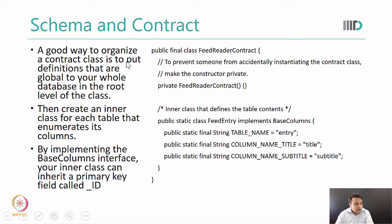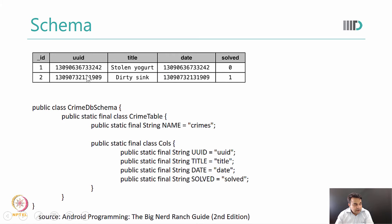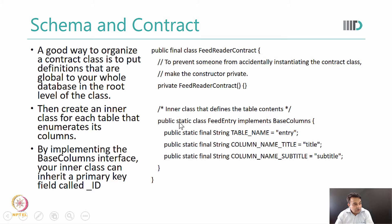A good way to organize a contract class is to put definitions that are global to your whole database at the root level of the class, so they are accessible to everything else in your program. Then, for each table we create an inner class. Just like here — this was one of the tables of our database, and for this table we created an inner class. So this is our top-level class, and for each table we create an inner class.